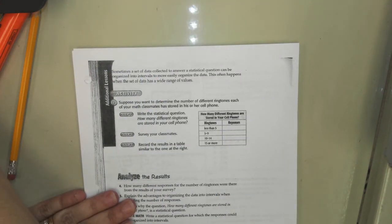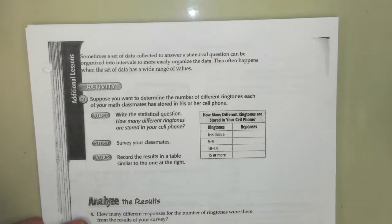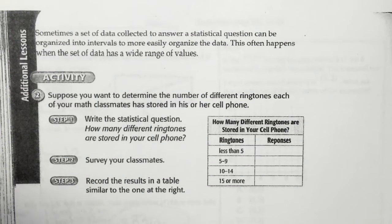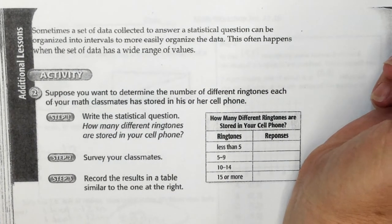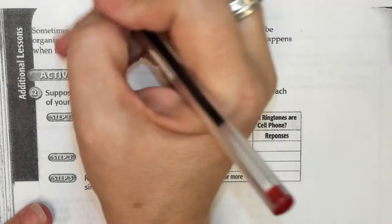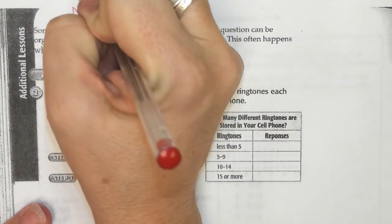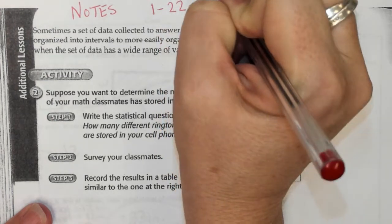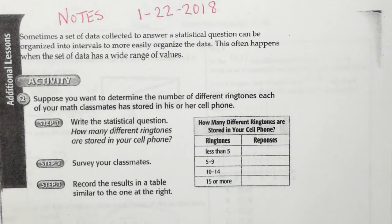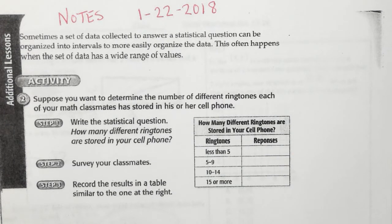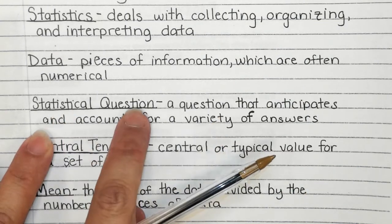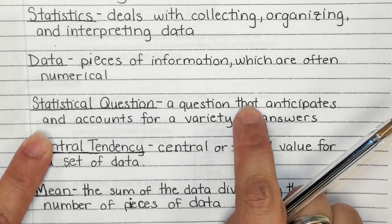Today's lesson is on statistical questions. We are starting the unit of statistics this week and talking about collecting data. What is a statistical question? We'll be covering this topic this week, next week, and maybe the week after. The vocab word is 'statistical question' — it is a question that anticipates and accounts for a variety of answers.